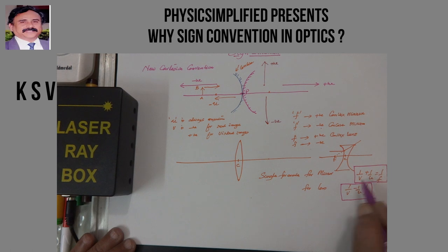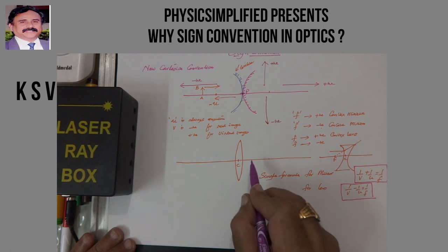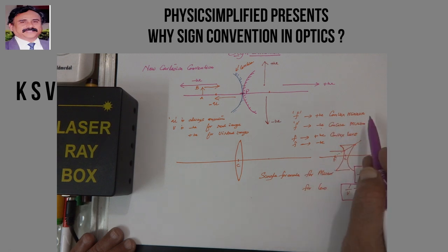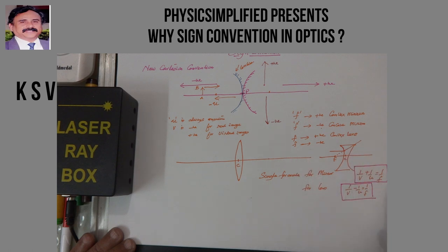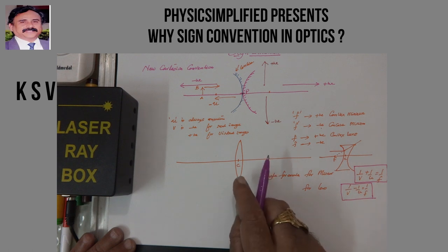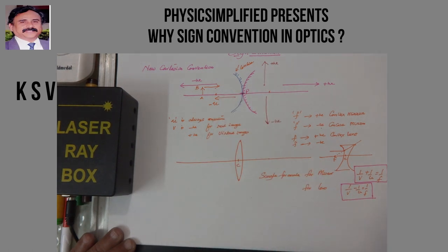Otherwise, we would have had to remember several separate formulae — for example: convex lens real image one formula, convex lens virtual image another formula, convex mirror one formula, concave mirror real image one formula, concave mirror virtual image another formula. So to reduce that burden, by applying sign convention, we can have only one formula for mirrors and one formula for lenses.